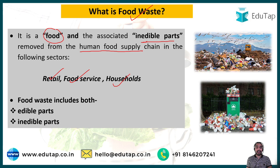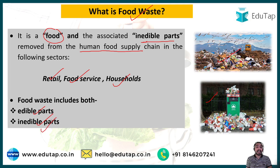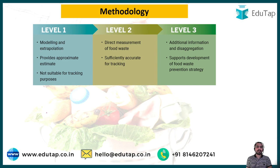The destination of removed food from the human food supply chain includes litter, landfills, and sewages. Food waste includes both edible and inedible parts. Edible parts are components of food intended for human consumption, while inedible parts are components not intended for human consumption — examples include bones, rinds, and stones.